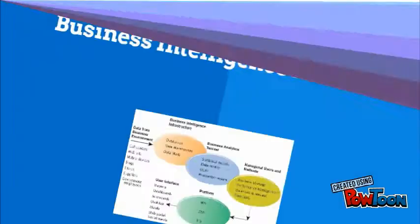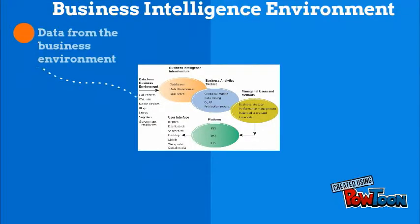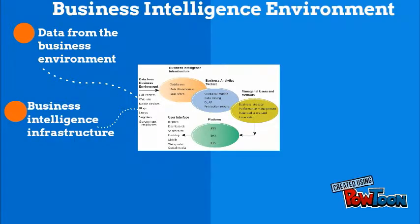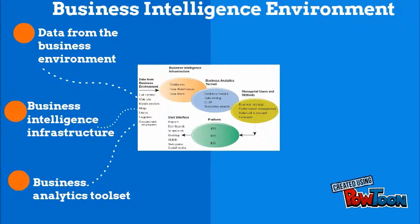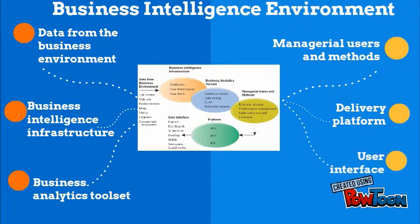There are six elements in the business intelligence environment: data from the business environment, business intelligence infrastructure, business analytics toolset, managerial users and methods, delivery platform, and user interface.